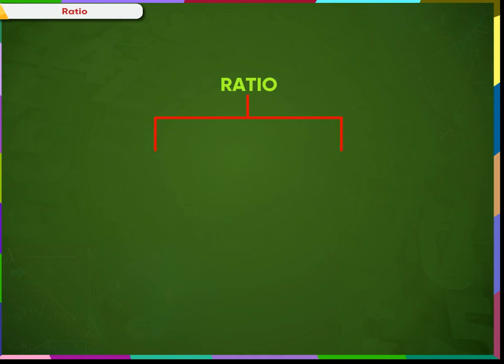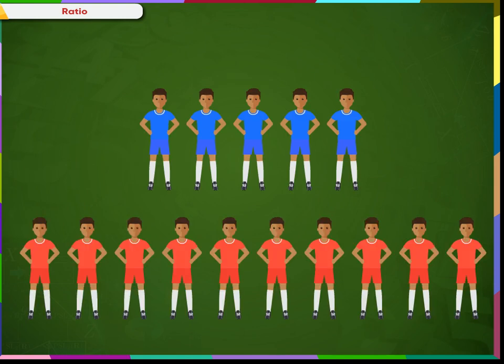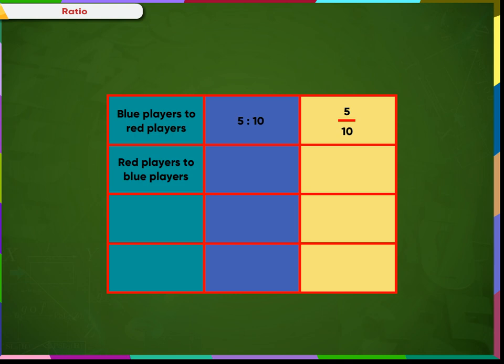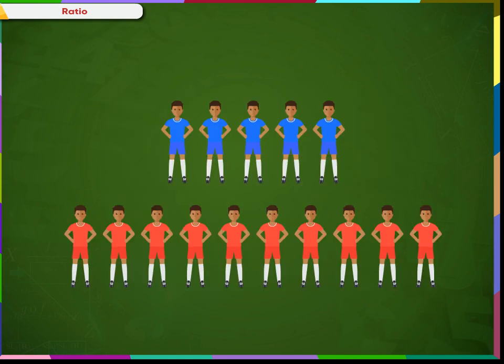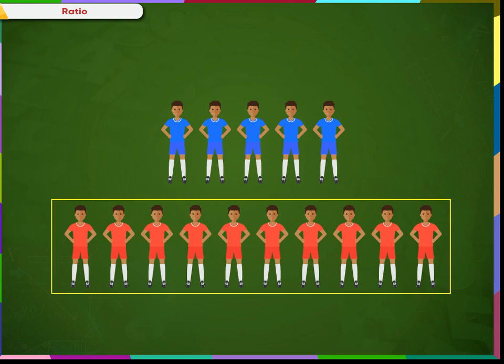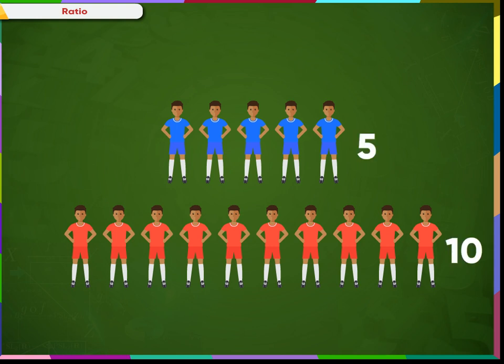Ratio is classified into two types: part to part and part to total. There are 5 blue players and 10 red players. The ratio of blue players to red players is 5 is to 10, and the ratio of red players to blue players is 10 is to 5. The ratio of blue players to total number of players is 5 is to 15, and the ratio of red players to total is 10 is to 15. Comparing blue to red is a part-to-part comparison. Comparing either group to the total is a part-to-whole comparison.